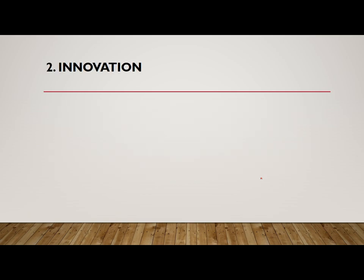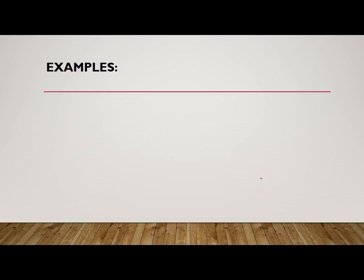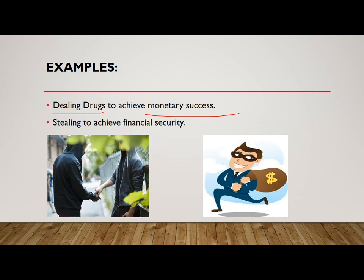In innovation, a person accepts the socially approved goals but rejects the means to achieve those goals. By rejecting formal means, they turn to other means — often criminal means — because there is a lack of formal means available. The ultimate purpose is still to achieve socially accepted goals. Examples include dealing drugs to achieve monetary success, or stealing to achieve financial security.